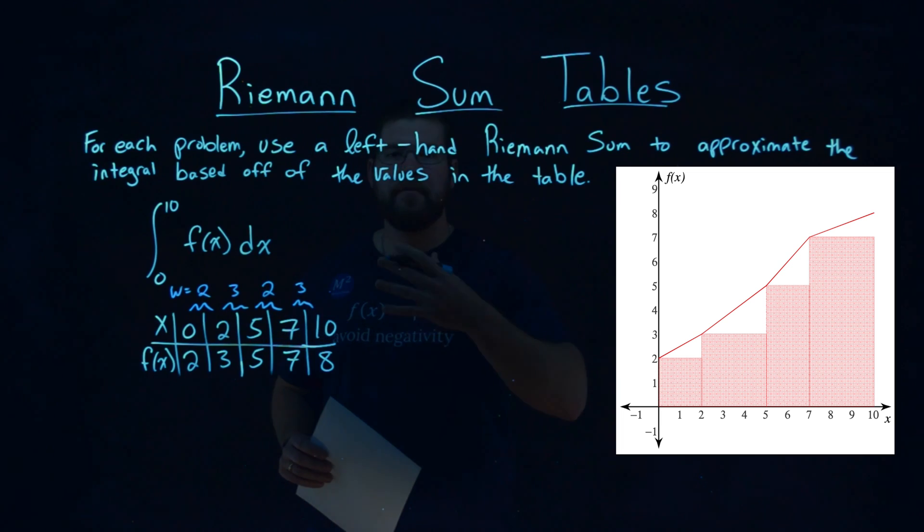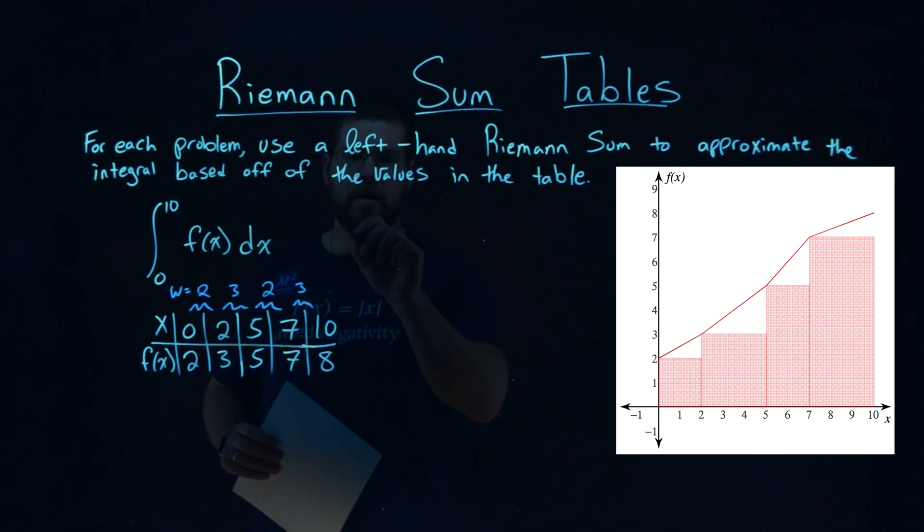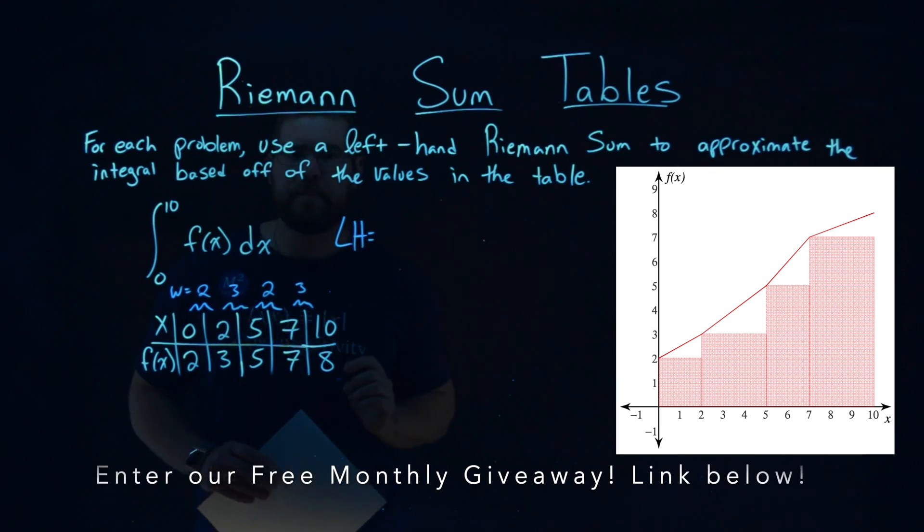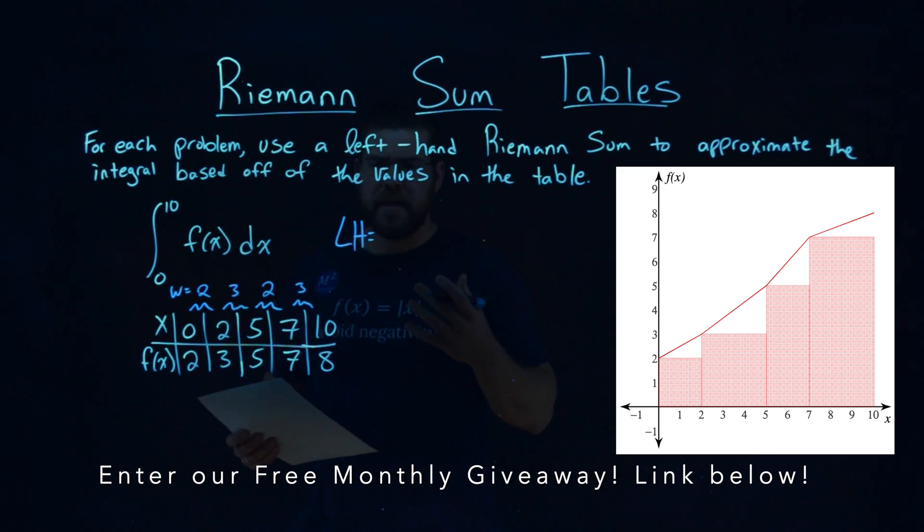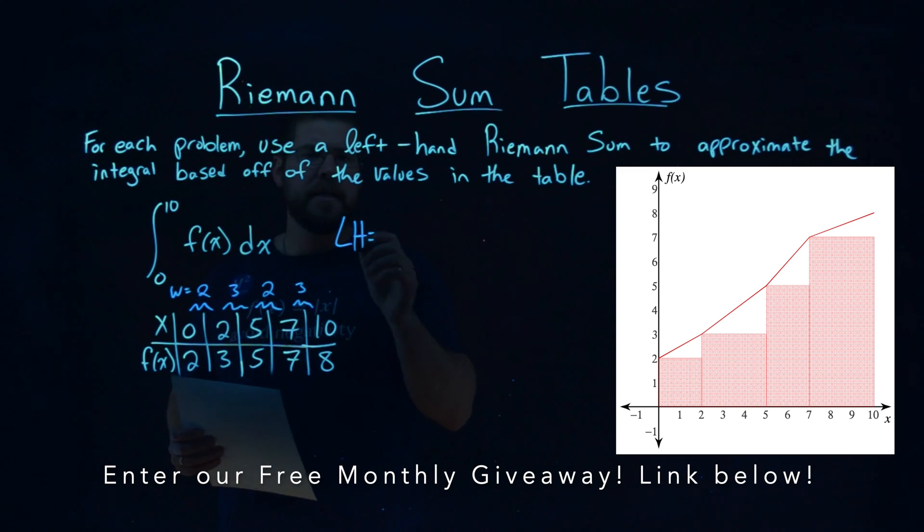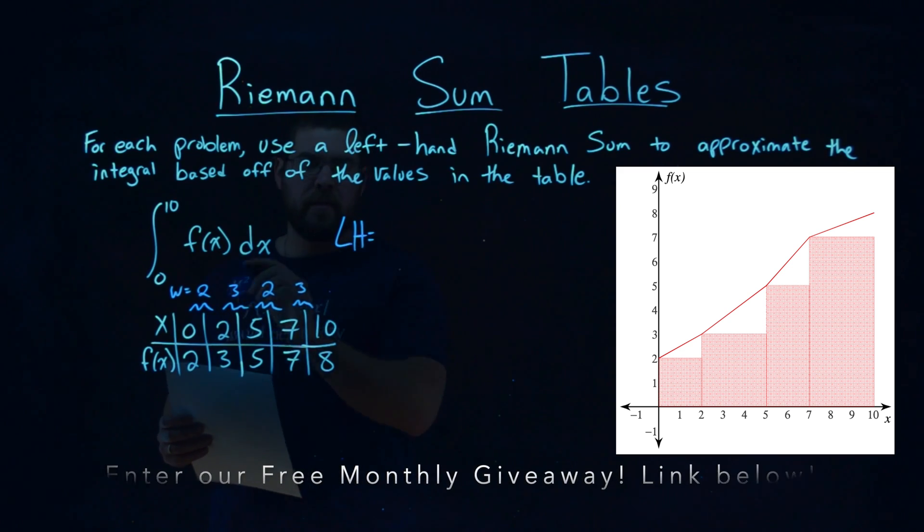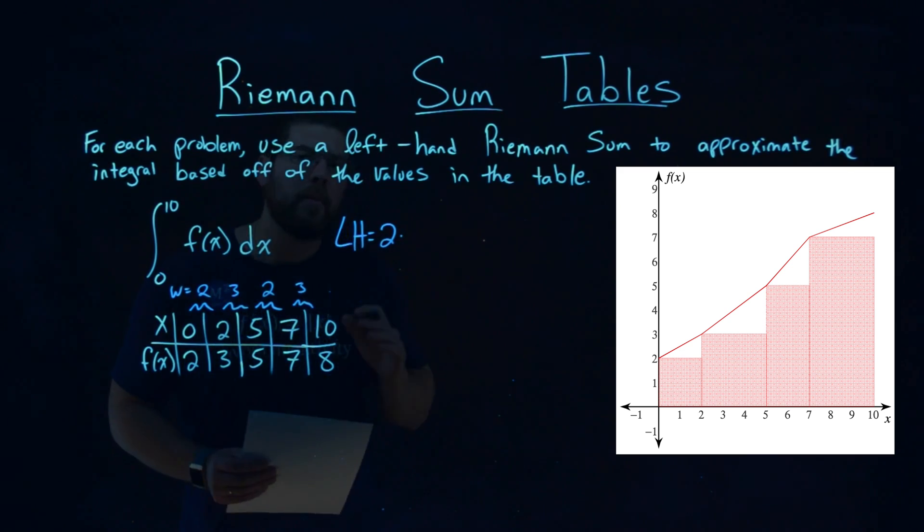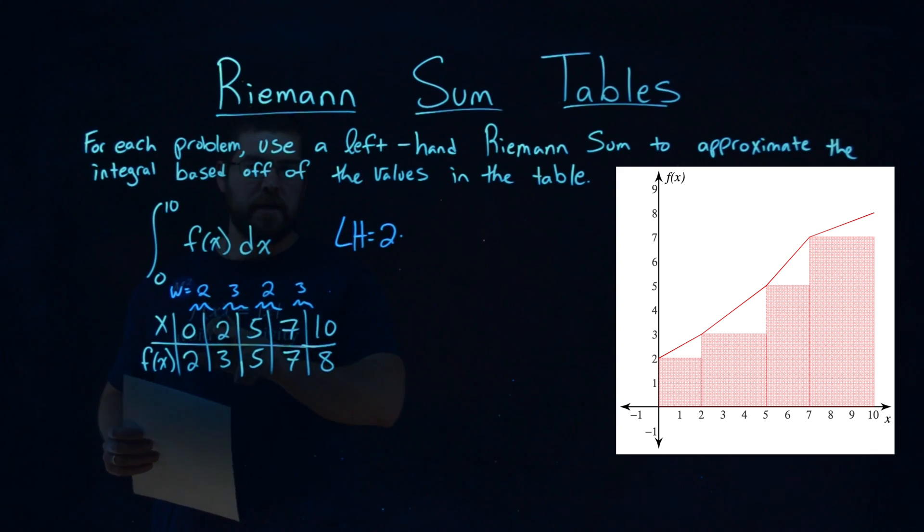Now they tell us this is a left-hand Riemann sum, so let's label it as left-hand here. The area of each rectangle we want to find is the width times the height. So we take the width of 2, and we have to multiply it by some height for this first one right here.